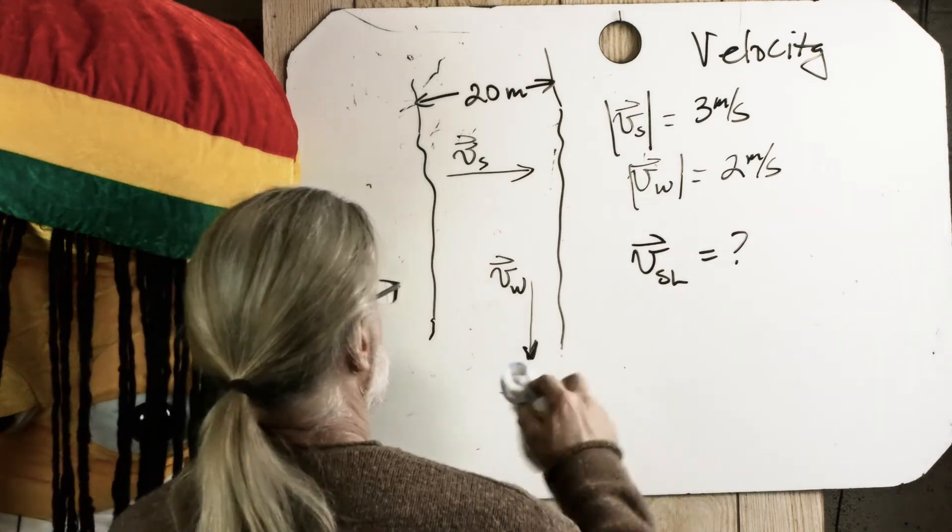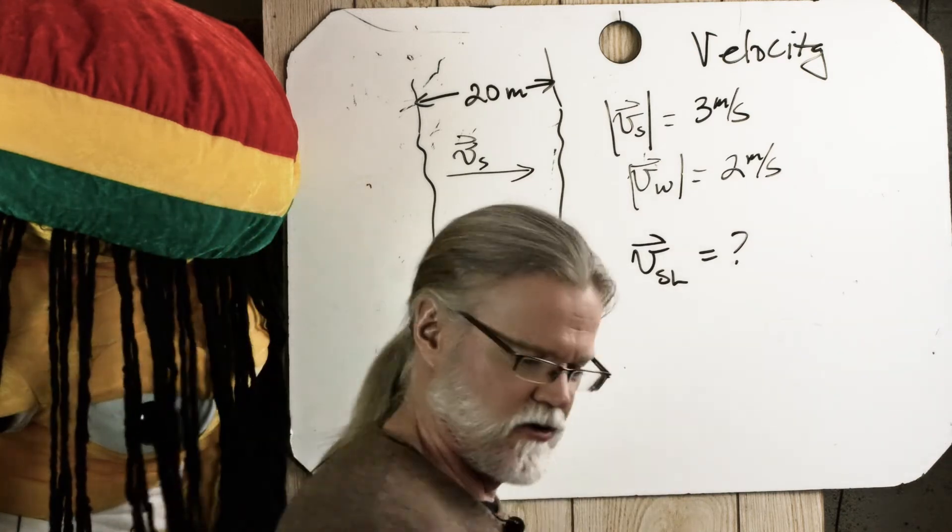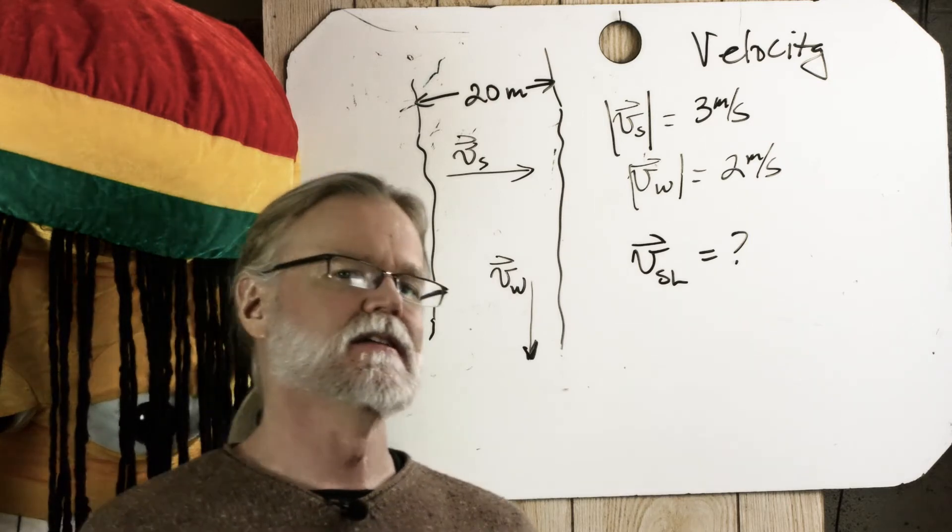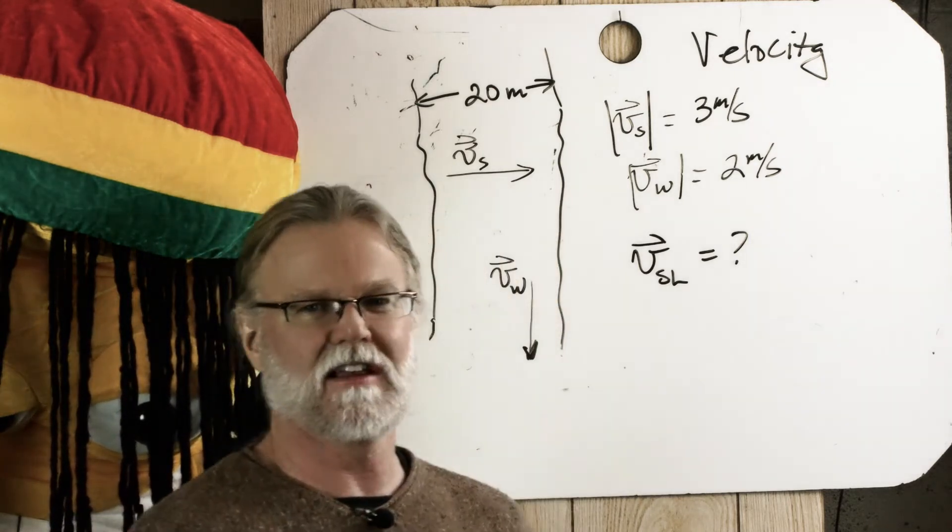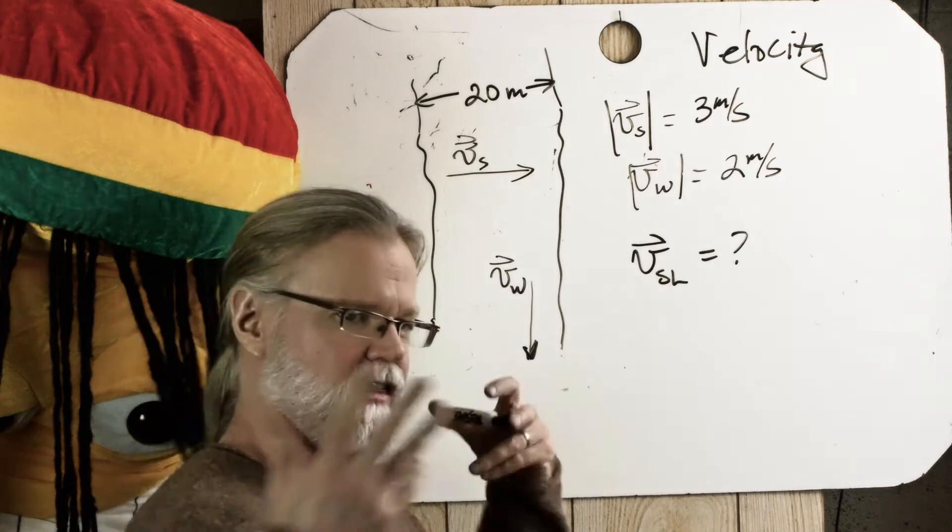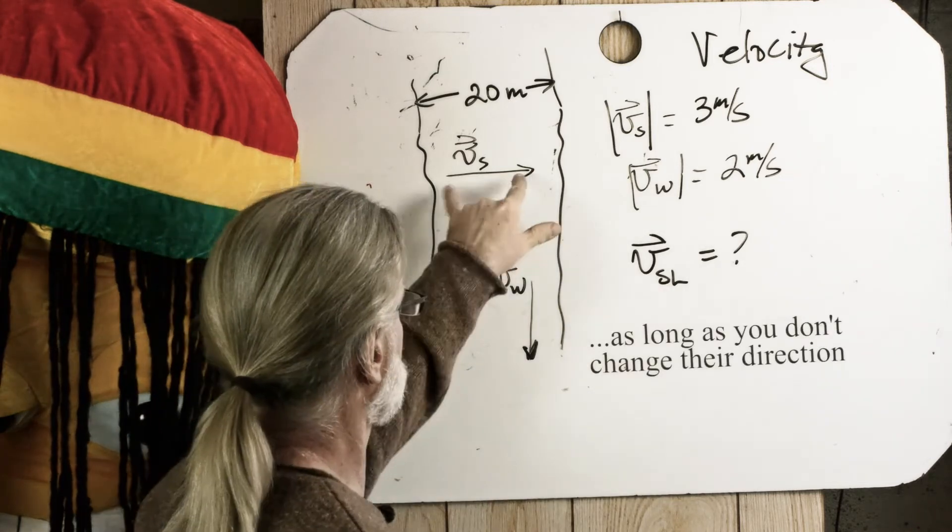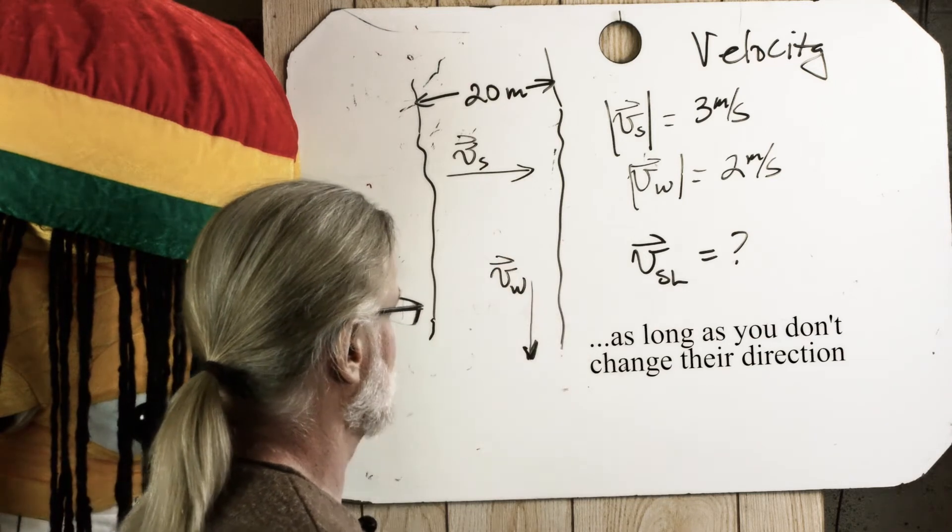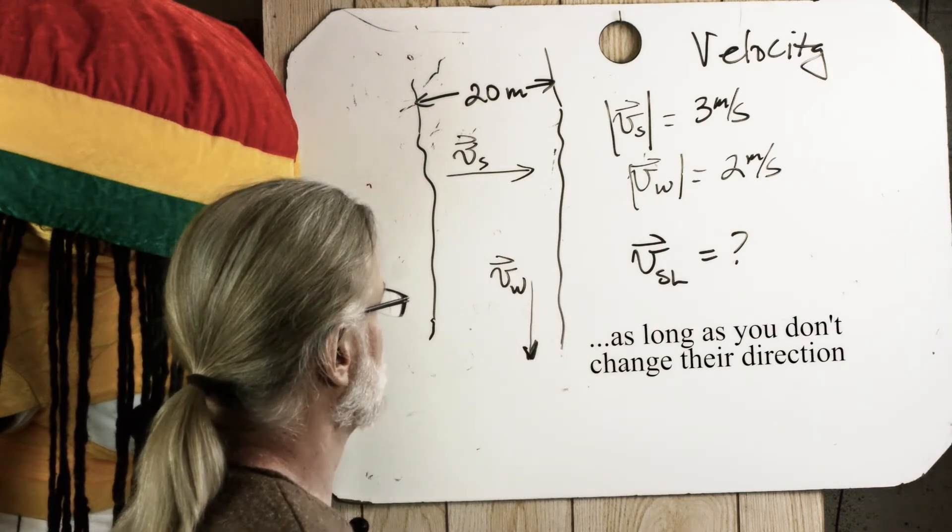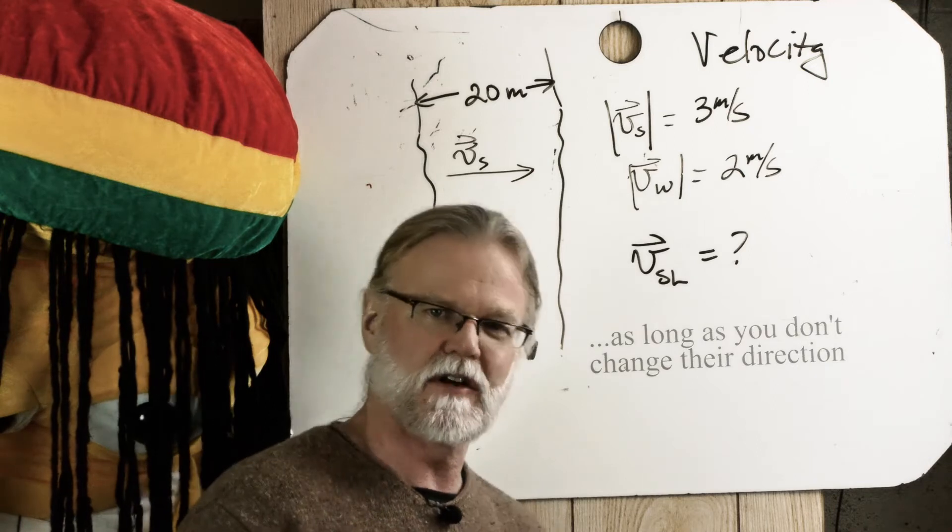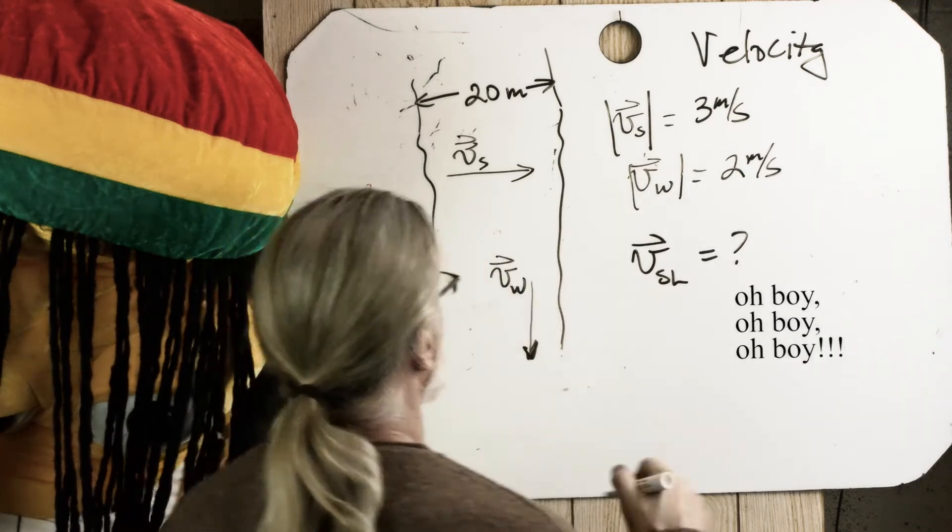One of the nice things about vectors, or I don't know if it's nice, it can be nice. One thing about vectors is they have magnitude and direction. They can be moved. They can be moved in any way you like them. So you can see I drew this vector here and this vector here for velocity. Well, we're going to add them using the tip-to-tail method.